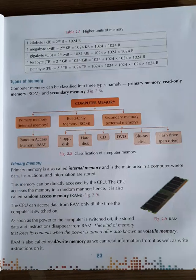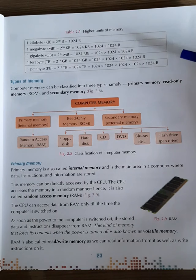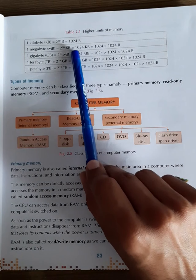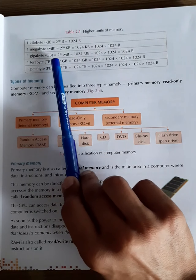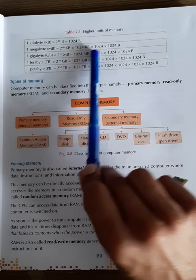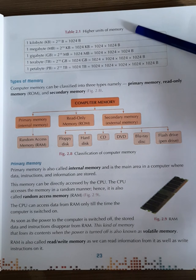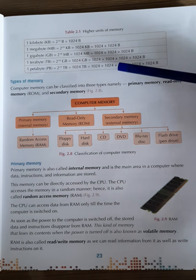Here we have a table to understand memory units. 1 kilobyte is equal to 1024 bytes. 1 MB is equal to 2 raised to the power 10 kilobytes, which is equal to 1024 KB. Similarly, memory is measured in bytes, kilobytes, megabytes, gigabytes, terabytes, petabytes, and so on.